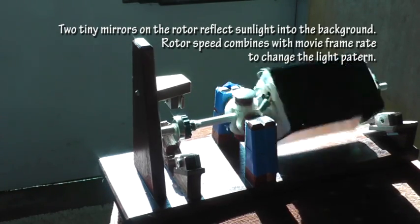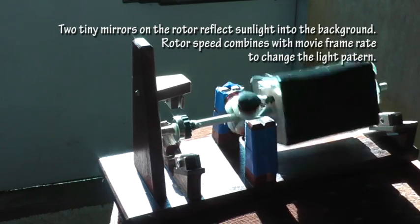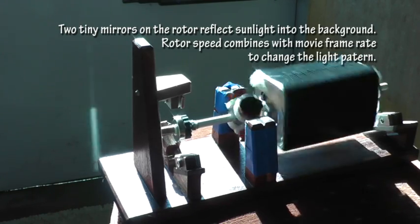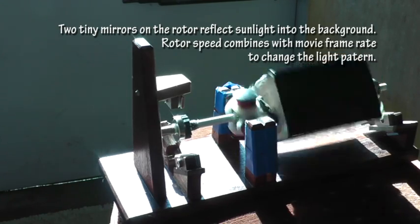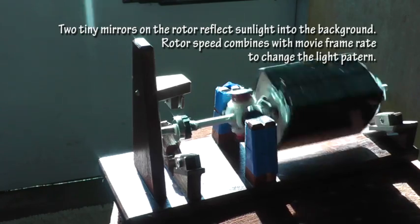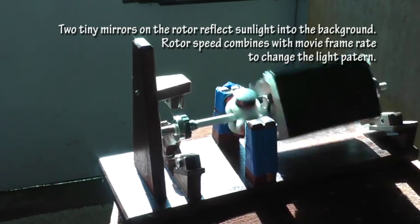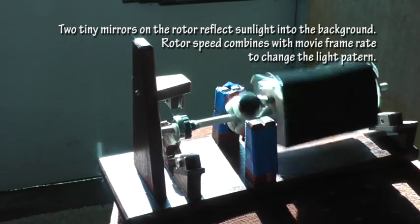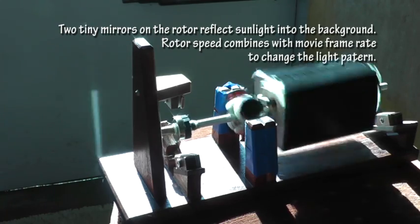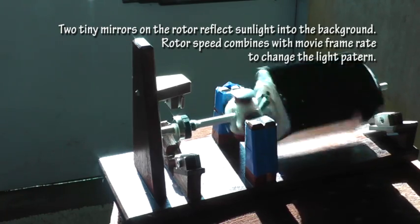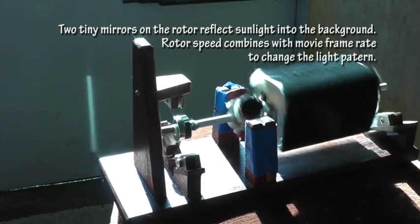Watch the light in the background. It's caused by a mirror connected to the rotor and rotation speed in combination with the frame rate of the camera causes those light streaks. Watch the pattern. You can see the motor is still accelerating.